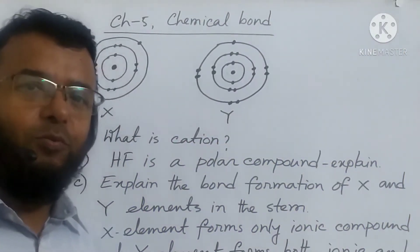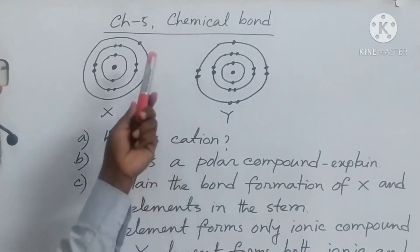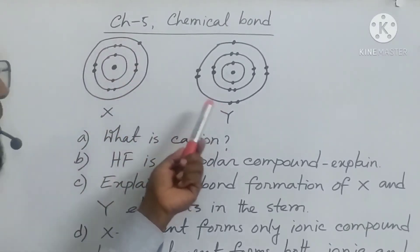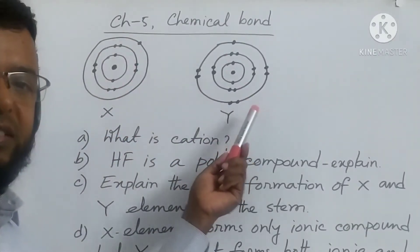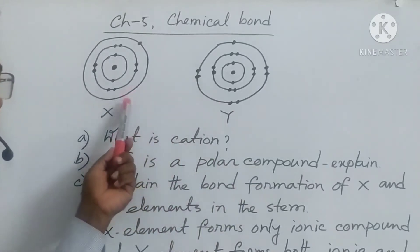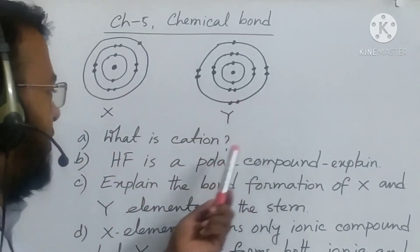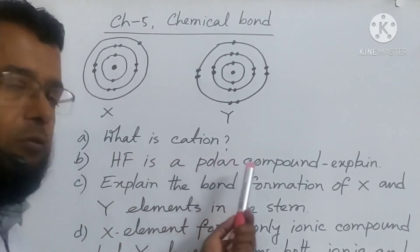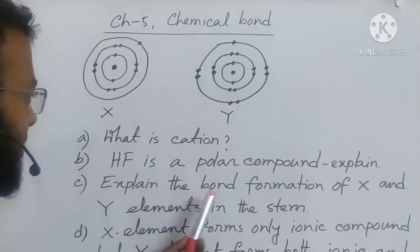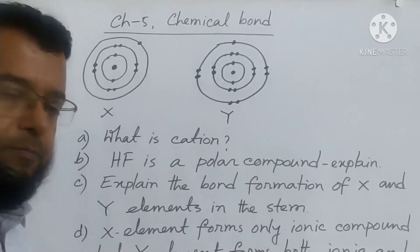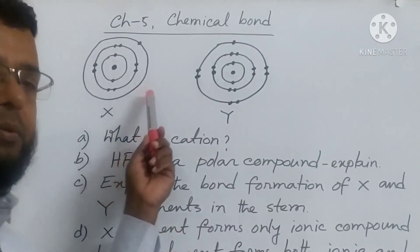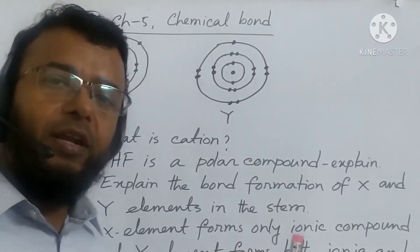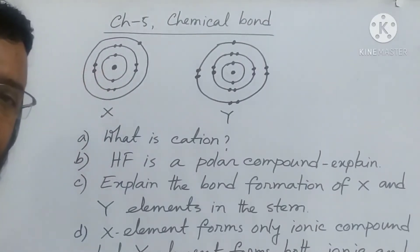Now creative question number 2 from chapter 5. I have written a question with X element having 11 electrons and Y element having 17 electrons — that is sodium and chlorine. We have to answer: what is a cation; hydrogen fluoride is a polar compound; explain the bond formation of X and Y; and explain why X element forms ionic compound but Y element forms both ionic and covalent compounds.